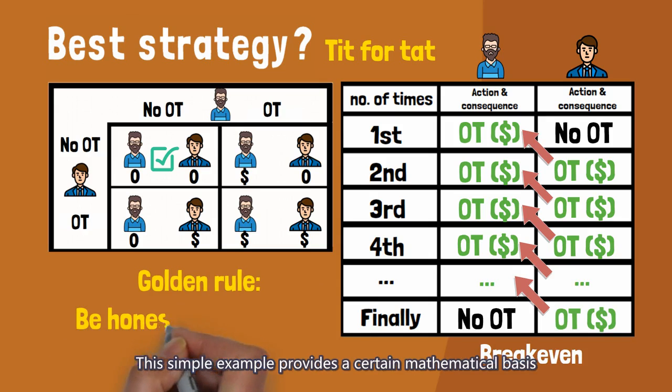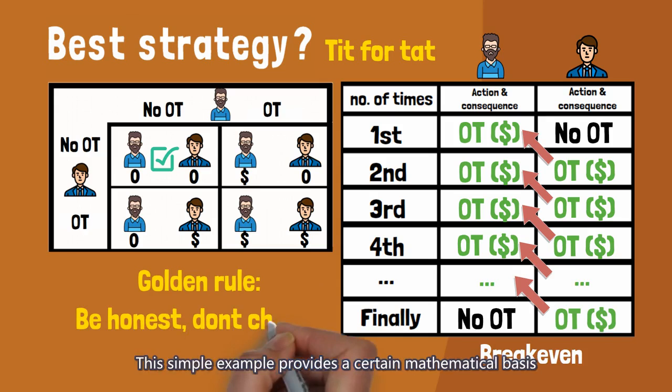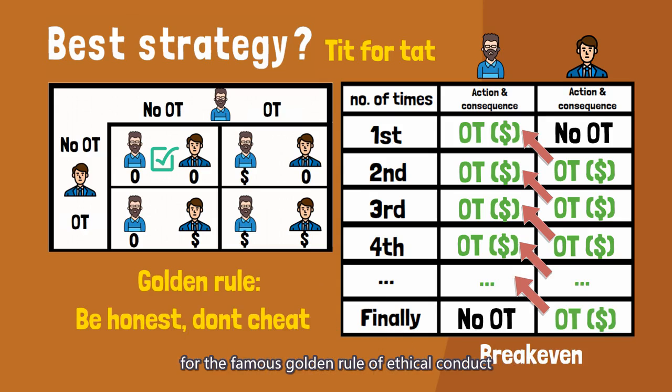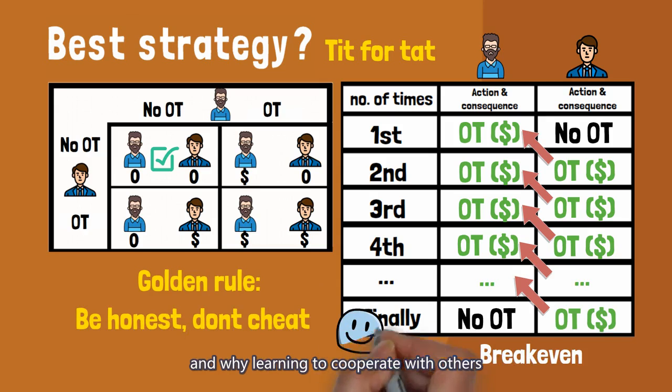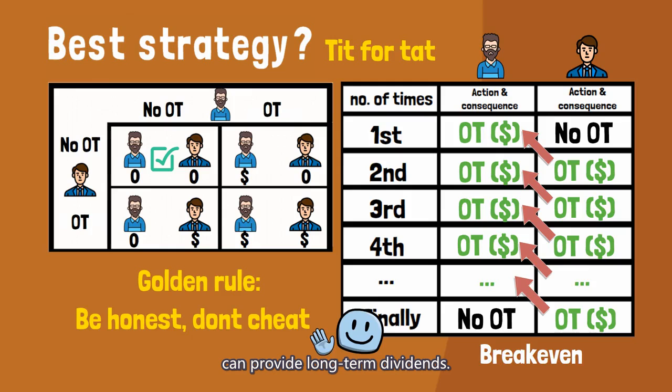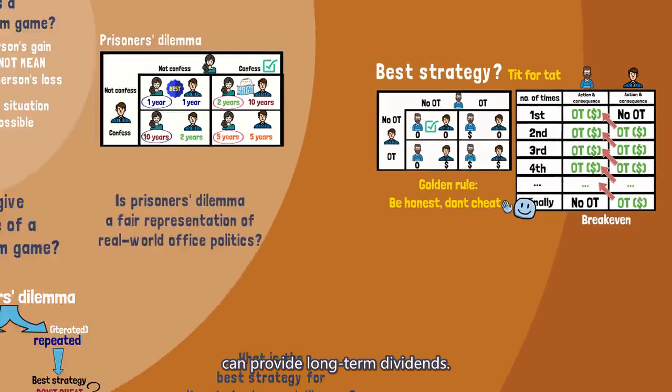This simple example provides a certain mathematical basis for the famous golden rule of ethical conduct, and why learning to cooperate with others can provide long-term dividends.